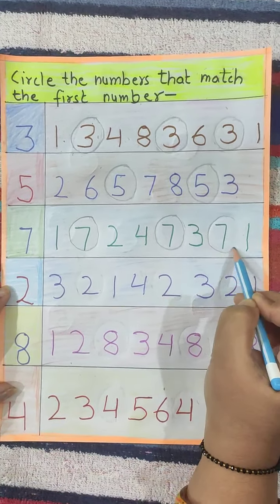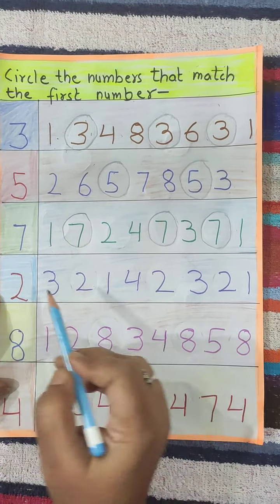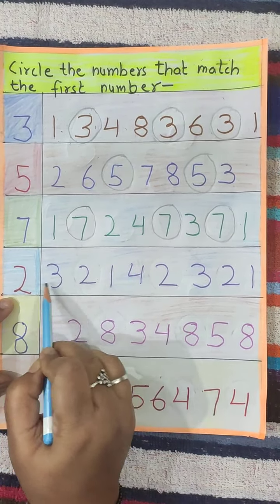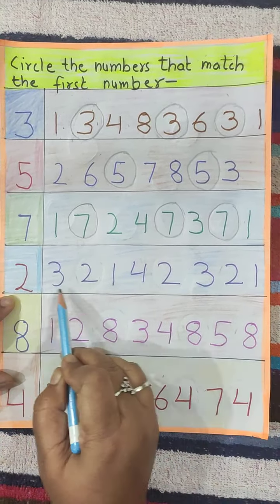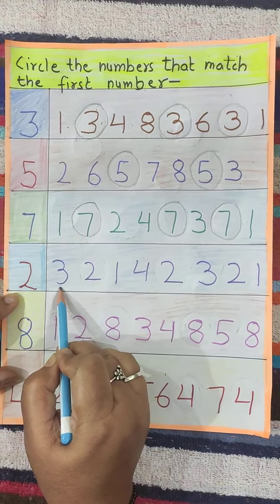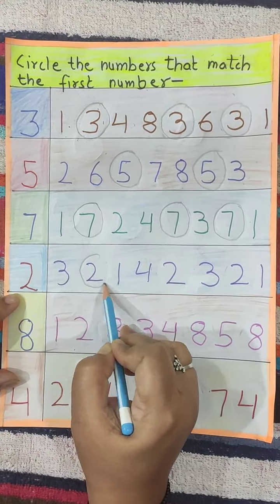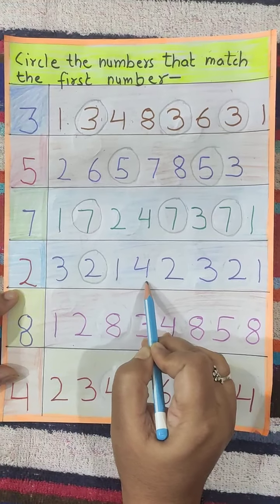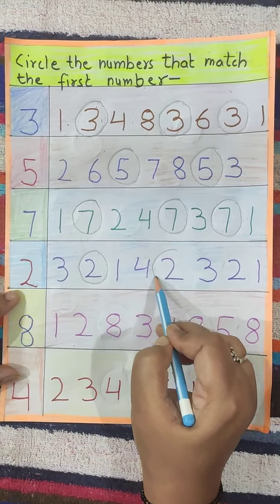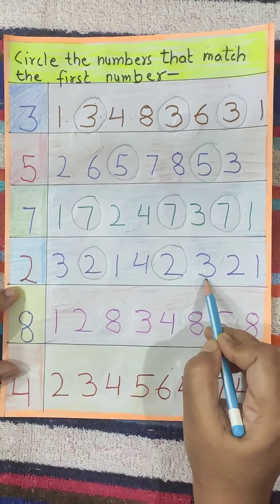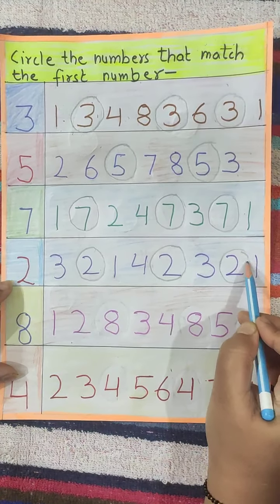Again 7 is written — we will circle 7. Now here 2 is written, so we will find where 2 is written: 3, 2 — we will circle 2. Then 1, 4, 2 — and here 3, 2, 8 — so we will circle 8.